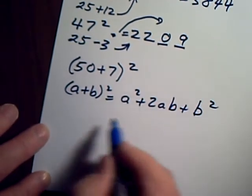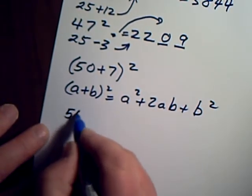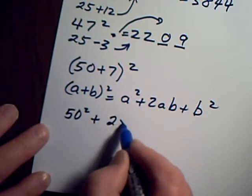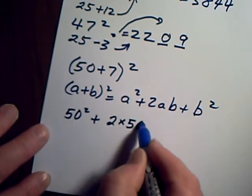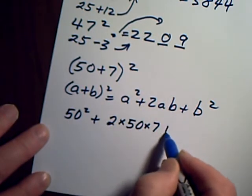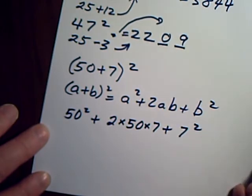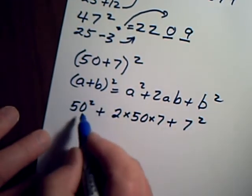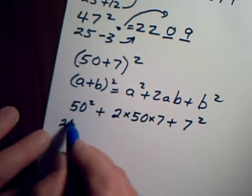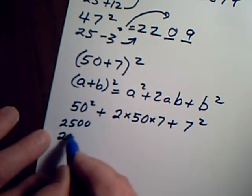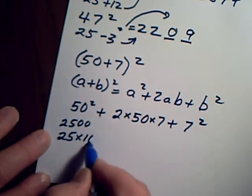So this equals 50² + 2 × 50 × 7 + 7². Well, 50 squared is 2500, and I'm going to write that as 25 × 100.